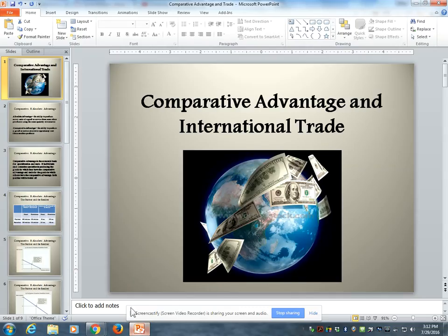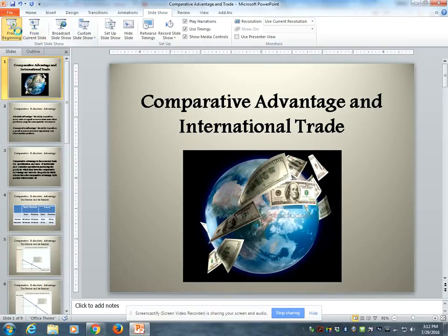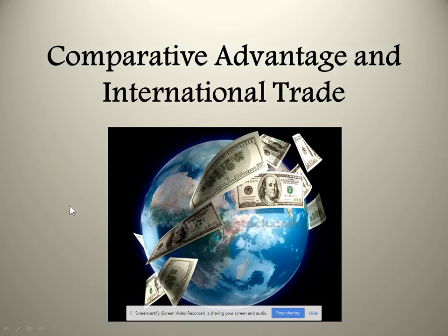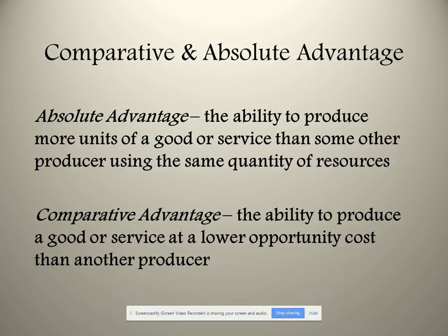We're talking about international trade, and the logic of it depends on a theory called comparative advantage and absolute advantage. There are two kinds of advantage in this theory. Absolute advantage is the ability to produce more units of a good or service than some other producer using the same quantity of resources — in other words, who is absolutely best at a given industry.